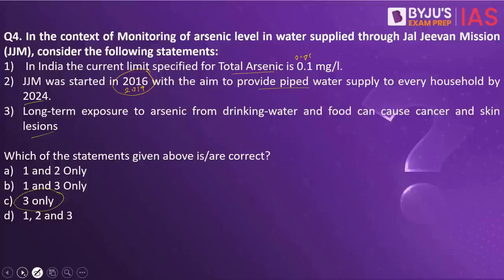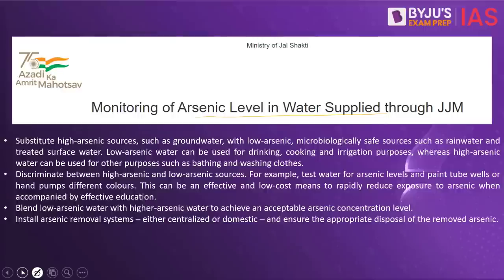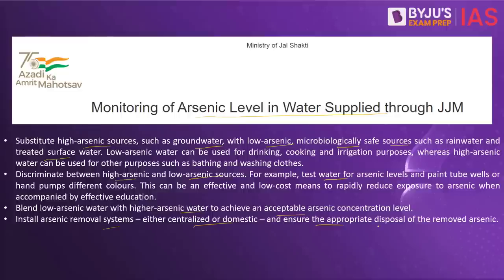In order to overcome these issues, certain measures can be taken: substitute high arsenic sources such as groundwater with low arsenic, microbiologically safe sources such as rainwater and treated surface water; discriminate between high arsenic and low arsenic sources by testing water and painting tube wells or hand pumps with different colors; blend low arsenic water with high arsenic water to achieve acceptable concentration; install arsenic removal systems either centralized or domestic; and ensure appropriate disposal of removed arsenic. The central government has advised states to conduct chemical and physical parameter testing once a year, and bacteriological parameter testing twice a year.